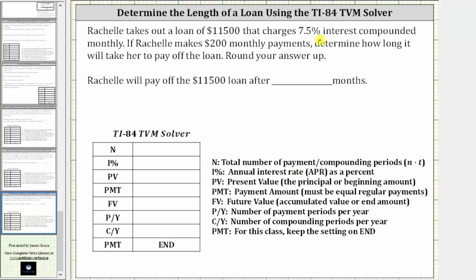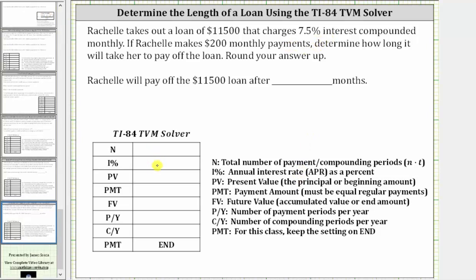The interest rate is 7.5%, and therefore I percent is 7.5. PV is the present value or beginning amount — because Rachel received $11,500 from the loan, PV is positive $11,500. PMT is the payment amount; Rachel is paying $200 monthly, so the payment is negative 200. The future value is the ending amount after the loan is paid off, which is zero.